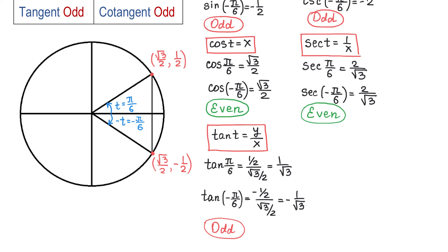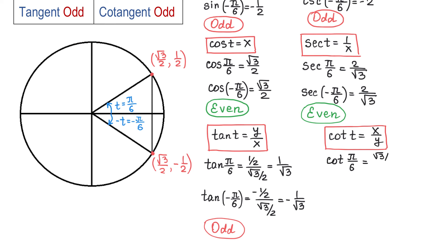The last function we will discuss will be cotangent of t. By definition, this is x over y. Then cotangent of pi over 6 equals square root of 3 over 2 divided by 1 half. We cancel 2 and 2 and we get square root of 3.